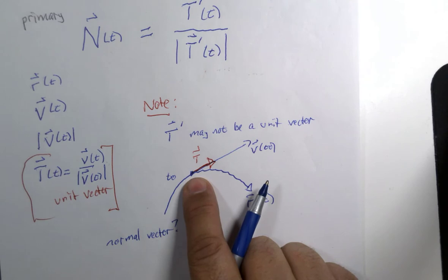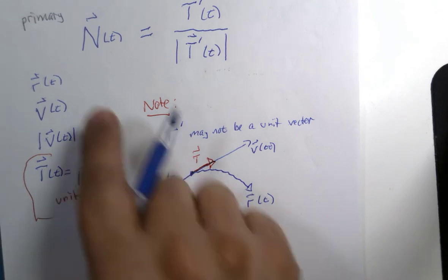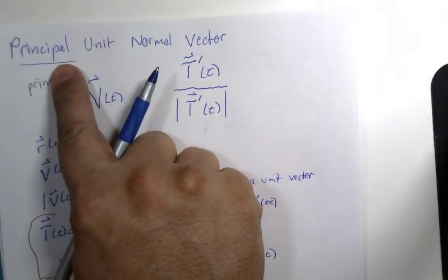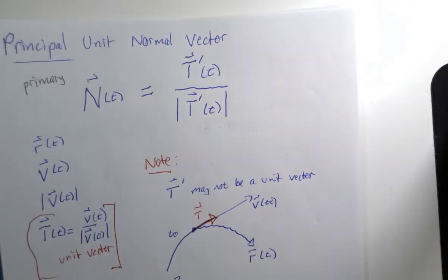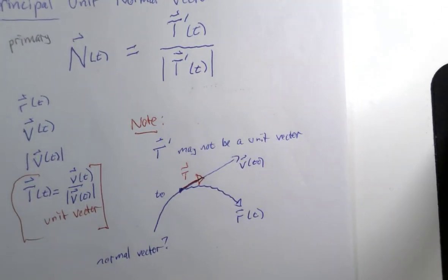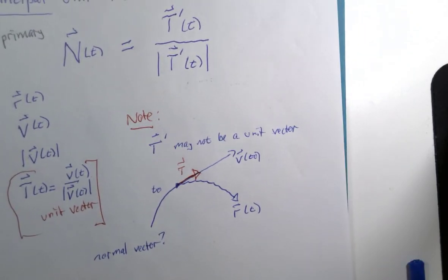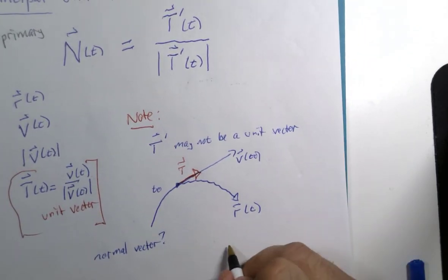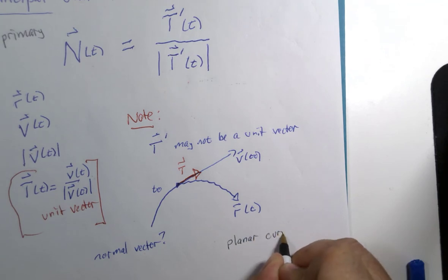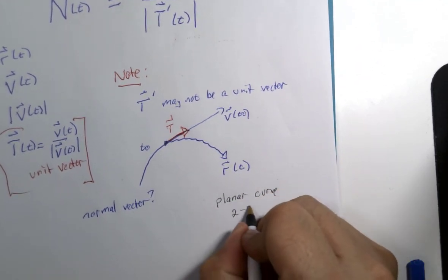But whether there's two or there's infinitely many, we still have to determine something about the primary or principal unit normal vector. For this particular diagram where the curve is on a plane, for a planar curve - translation: two dimensions.